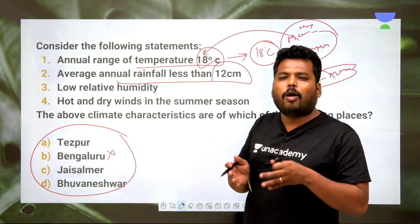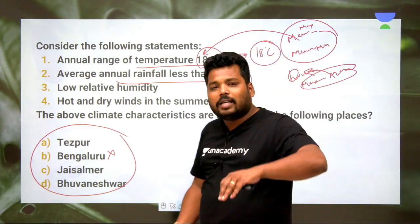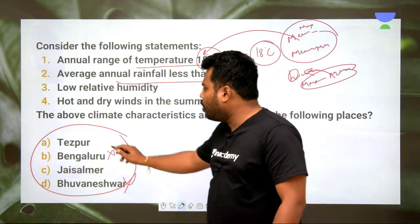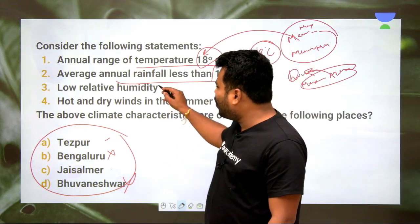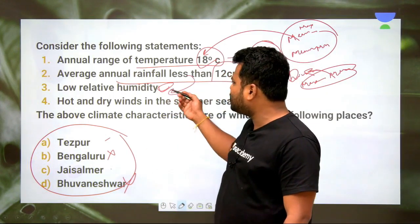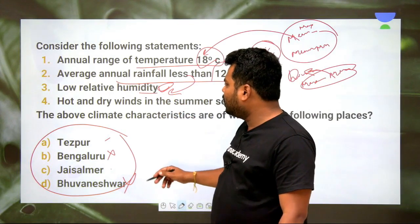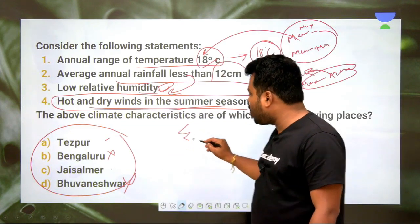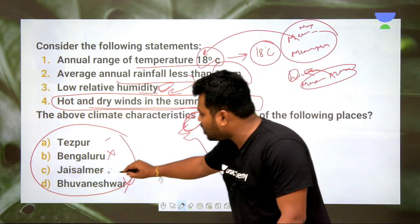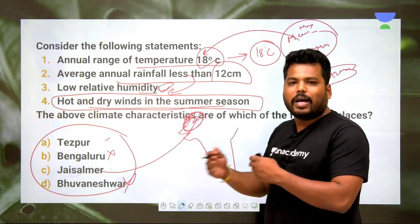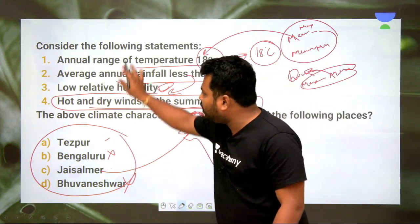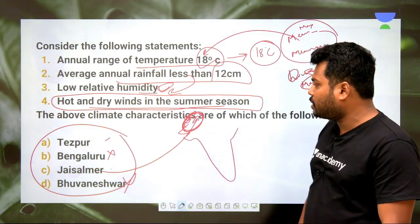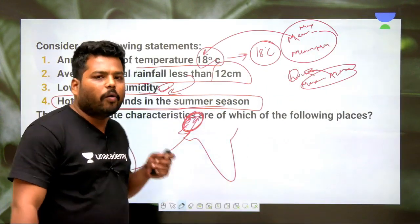Bangalore cannot be the answer as it experiences cool, moderate, humid climatic conditions with good precipitation due to its elevation. Bhubaneswar also has good rainfall. Between Agartala and Jaisalmer, the clues are: low relative humidity, less precipitation, and hot dry winds blowing in summer. Hot and dry winds blow in Rajasthan, and Jaisalmer in Rajasthan borders Pakistan — hence Jaisalmer is the answer. UPSC often describes a region and asks you to identify it.